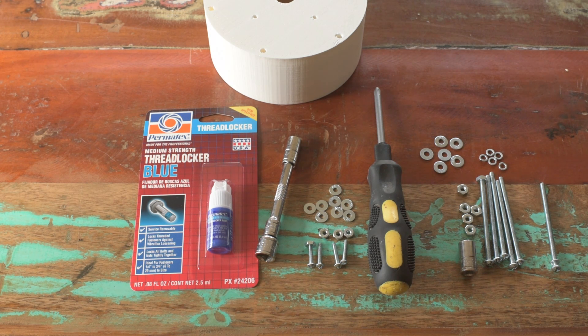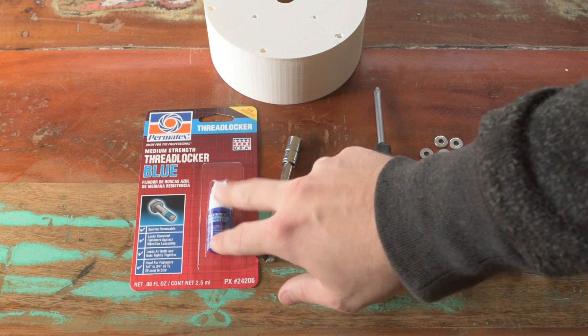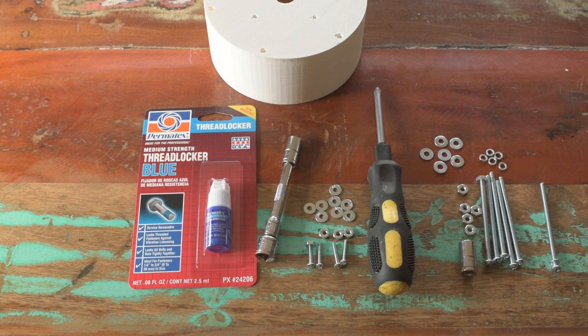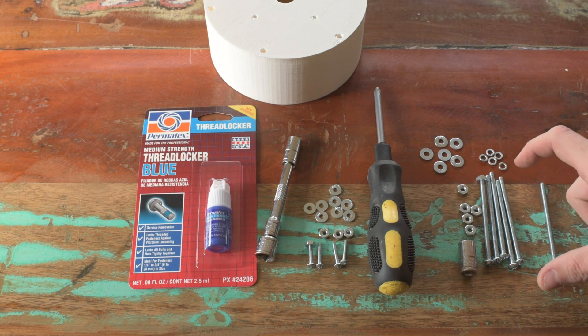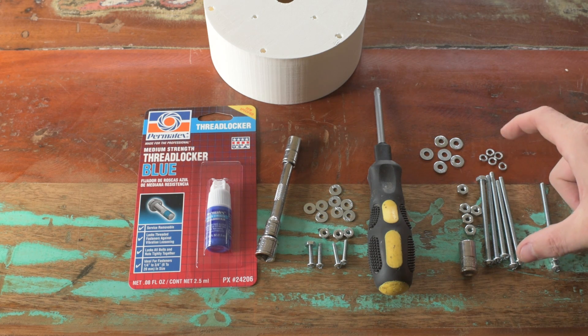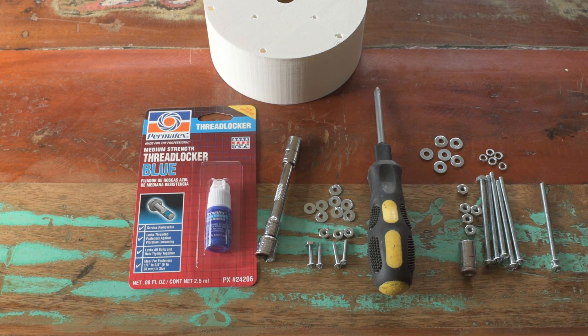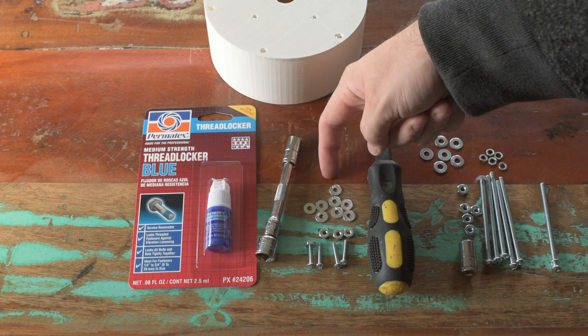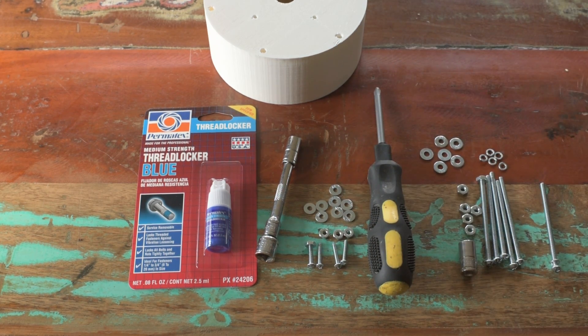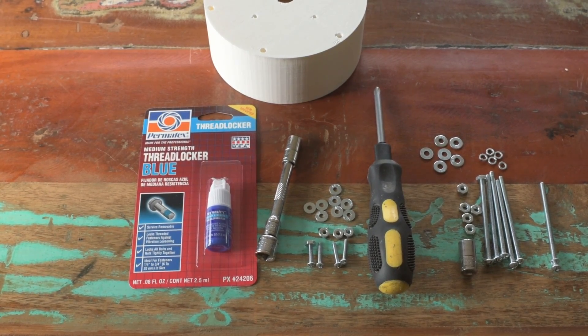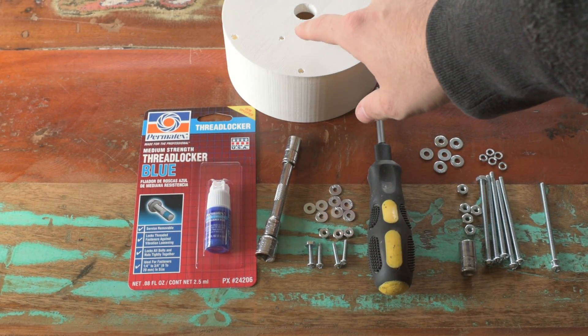So I got some thread locker because I didn't have enough room to use lock nuts. I normally prefer using lock nuts, but in the diameter that I needed for these screws, they didn't have the length that I needed to use lock nuts. So I'm using thread locker instead. Using blue, not red because blue is removable. So here, this is the mounting hardware necessary for mounting the motor itself to the top.